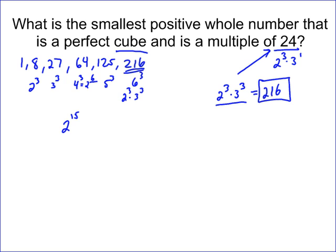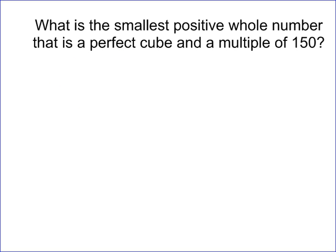We can do one that's a little harder. What is the smallest positive whole number that is a perfect cube and a multiple of 150? Remember, the first thing you do is look for the prime factorization of 150.